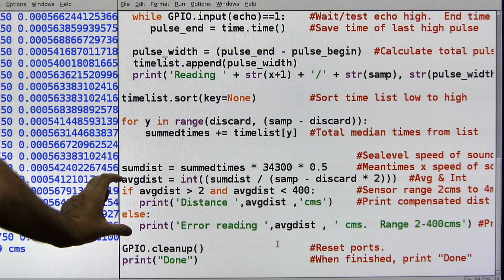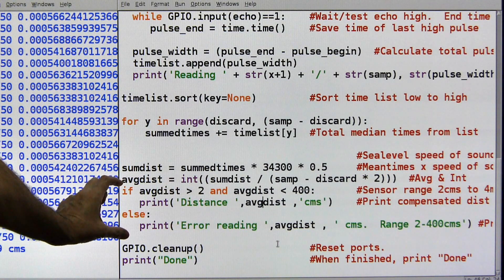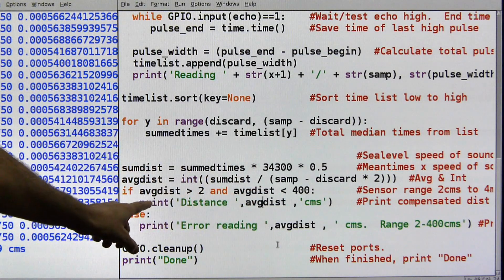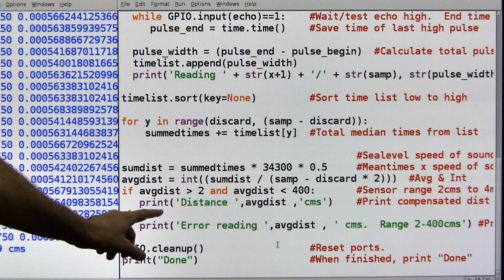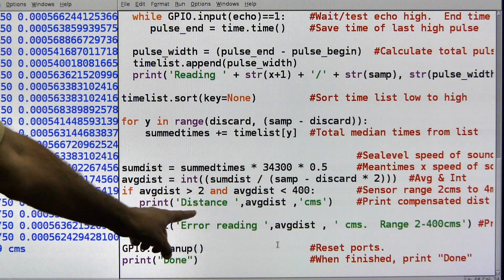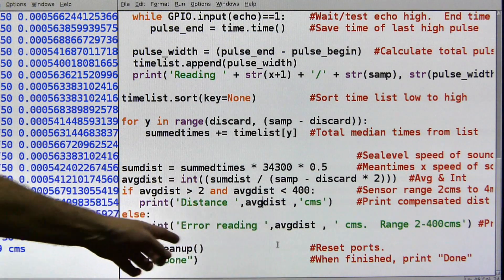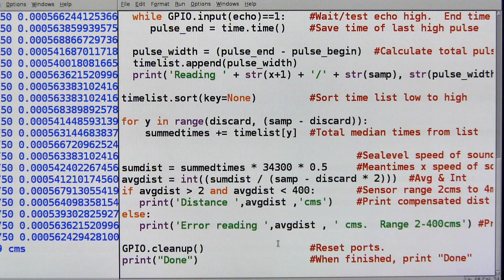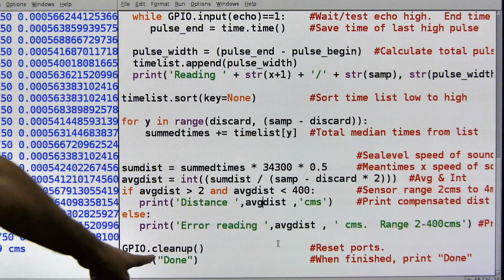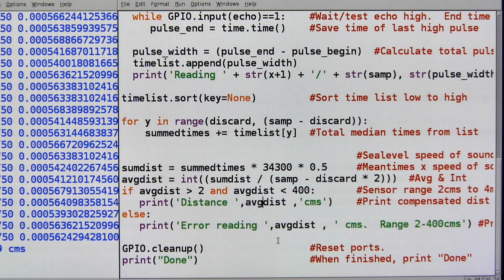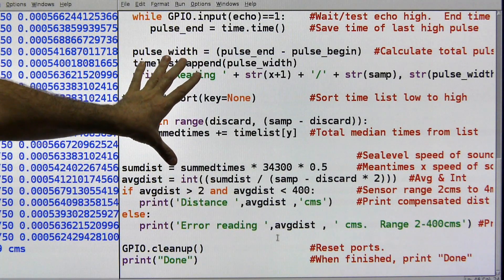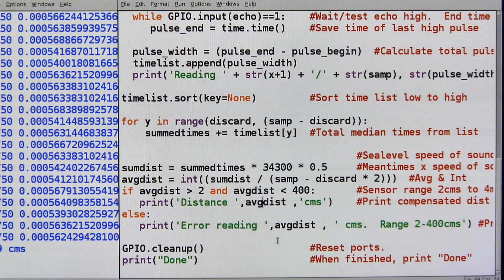And then here I check to see if the number coming back is within range. The device's range is 2 cm to 400 cm. If the answer, if the total answer comes out as within that range, then I print it. Otherwise, I give an error reading and I print the value anyway so that you can see how far off is it, what's going wrong here. And then I do the GPIO cleanup and I print done. That's pretty much it. So by doing this, we can make the Pi give us back a lot more accurate readings than it would otherwise. That's it for today. Hope you found it useful and interesting in your Pi experiments.